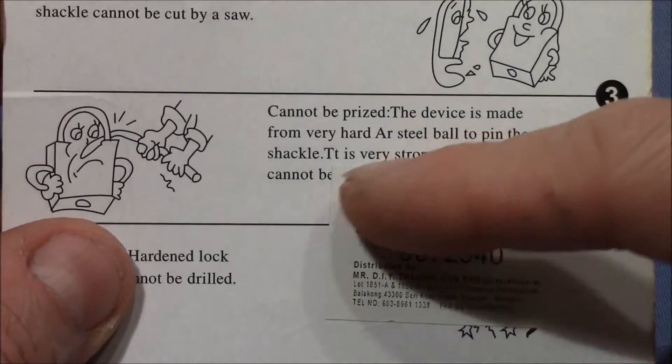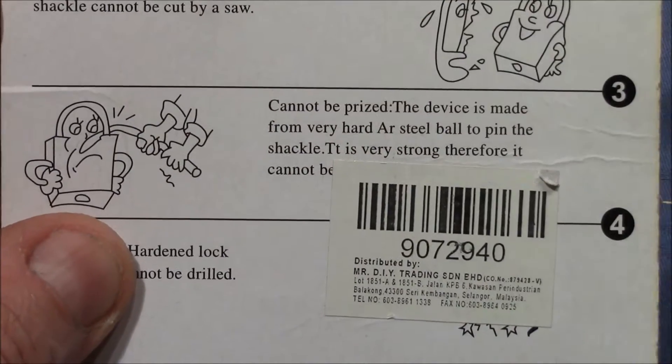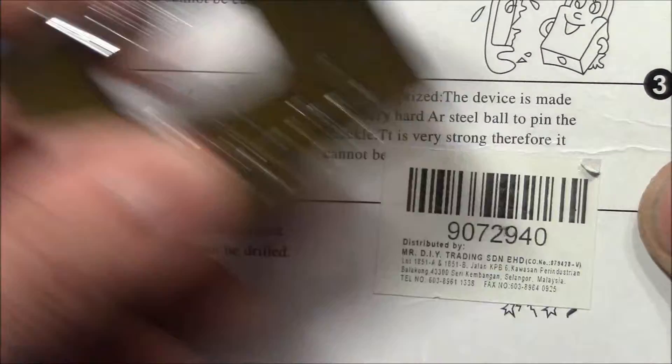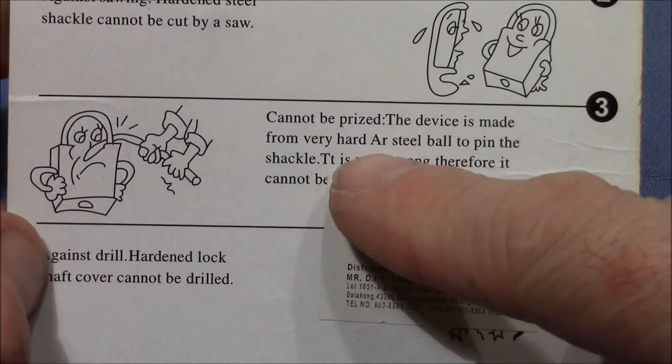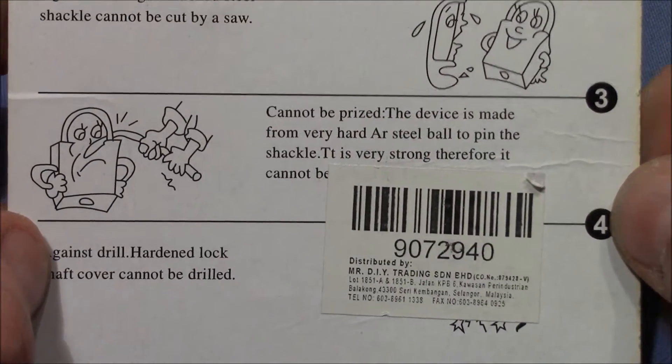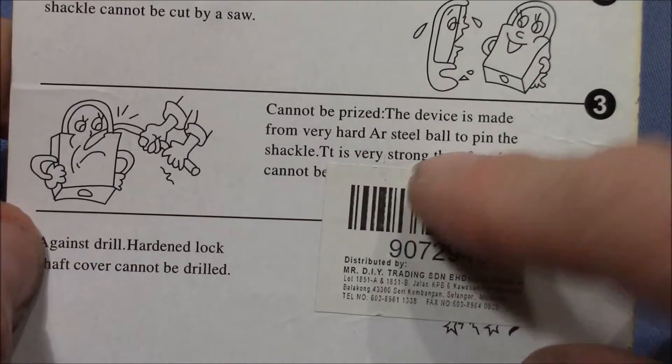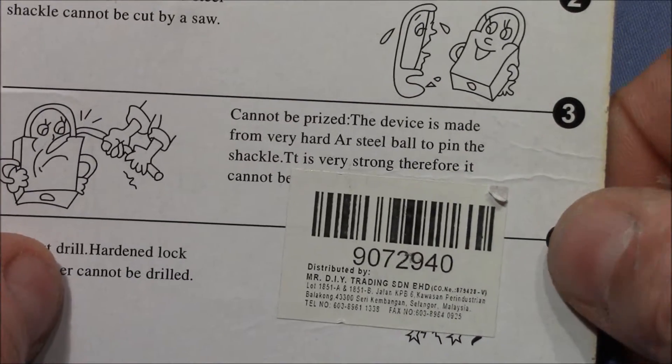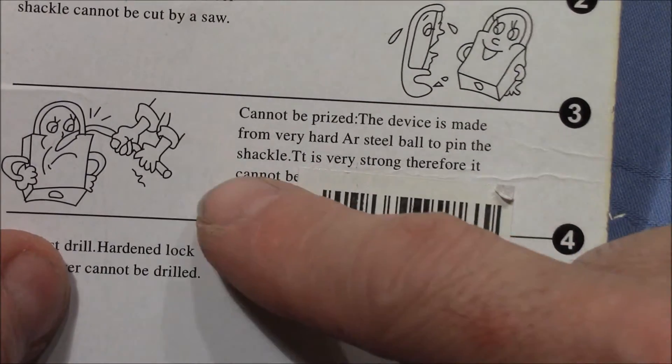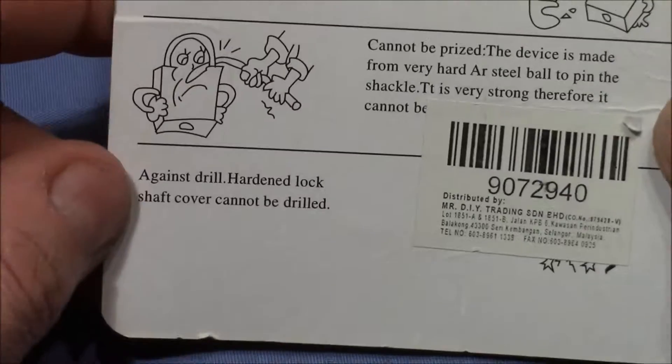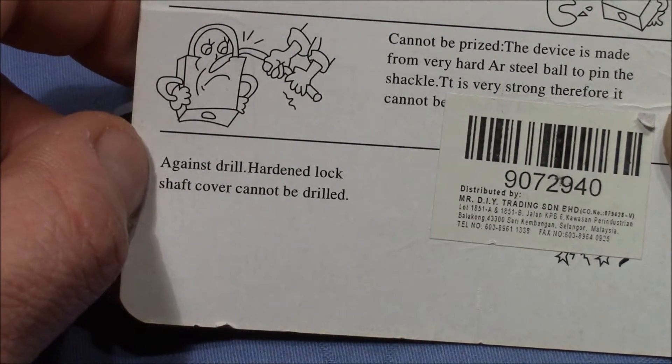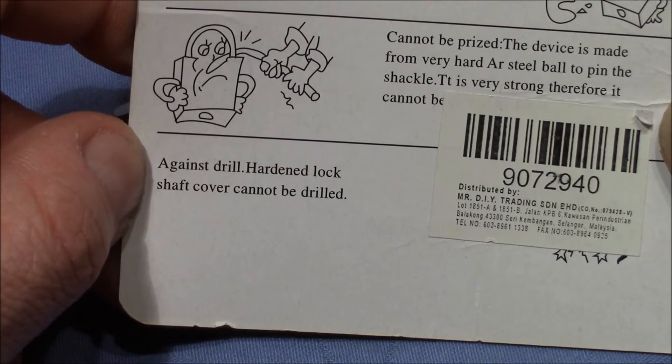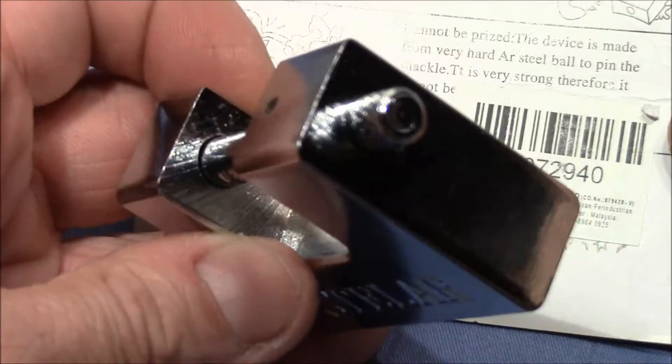It cannot be pried. The device is made from very hard steel ball to pin the shackle. So there is a steel ball inside to pin the shackle. This is very strong, therefore it cannot be pried open probably. And against drill: hardened lock shaft cover cannot be drilled. We will see.